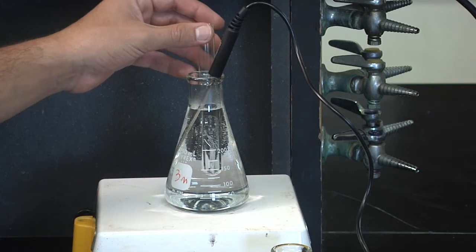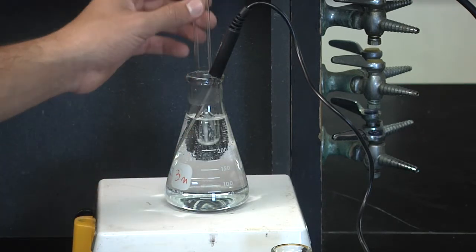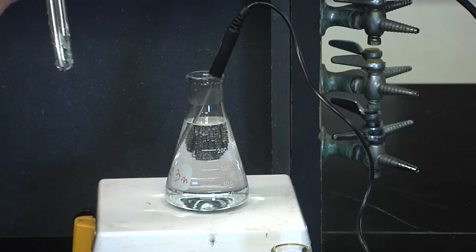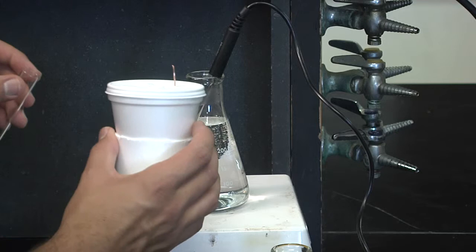Once the metal has been inside for about five minutes, we can assume that they are now equal temperatures. We can then go ahead and take our metal pellets out and put them into our coffee cup calorimeter.